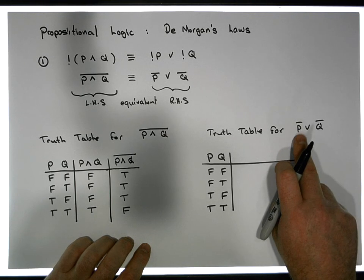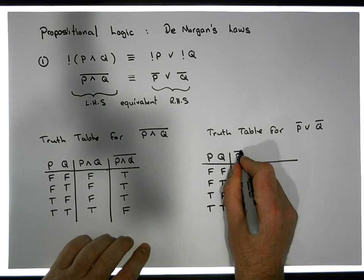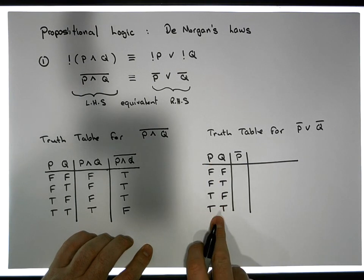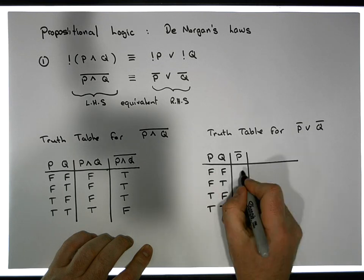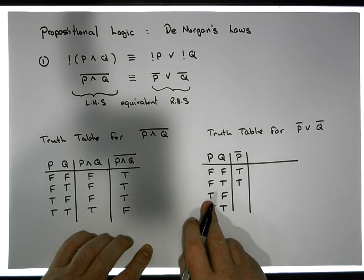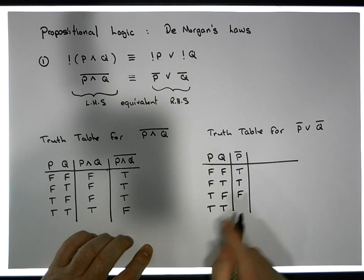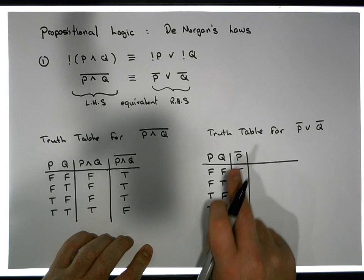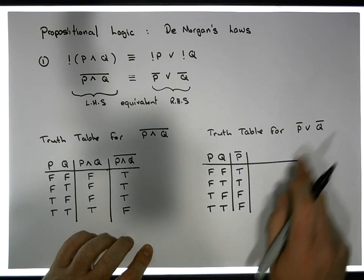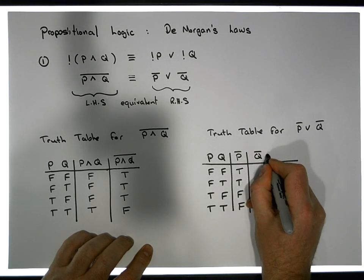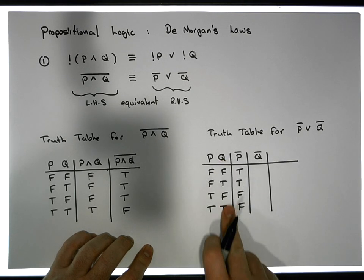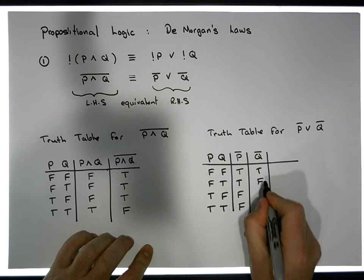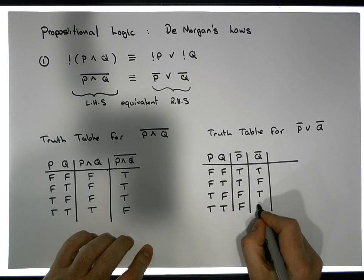So I need to evaluate what the negated P is. Here are the P truth values down the first column. When P is false it becomes true; when P is false it becomes true; when P is true it becomes false; when P is true it becomes false. Now we have single truth values for the negated P. We also need to negate the Q. Here are the truth values for Q: false becomes true, true becomes false, false becomes true, and true becomes false.